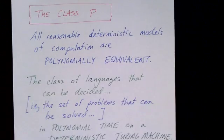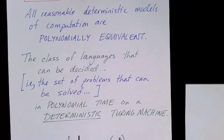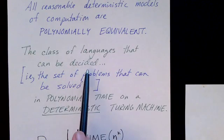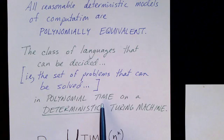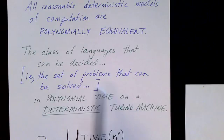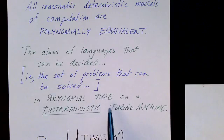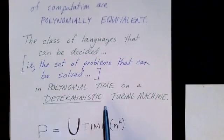And so, we can define the class P as the class of languages that can be decided in polynomial time on a deterministic Turing machine. It's the set of problems that can be solved by deterministic Turing machines in polynomial time.